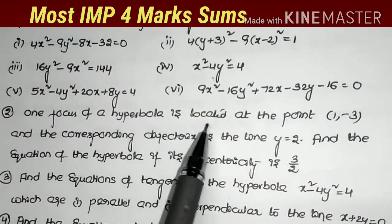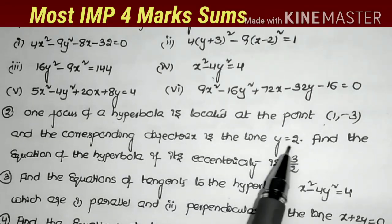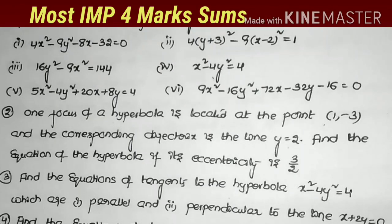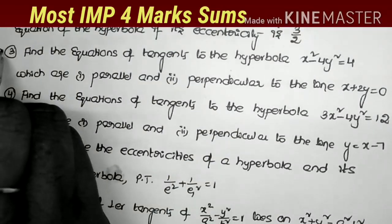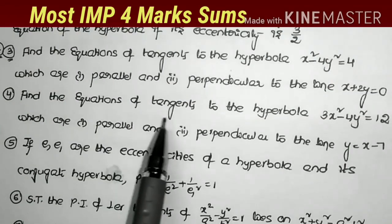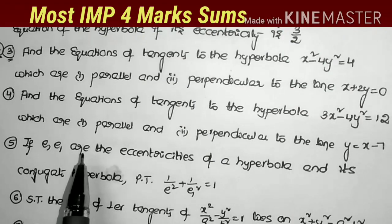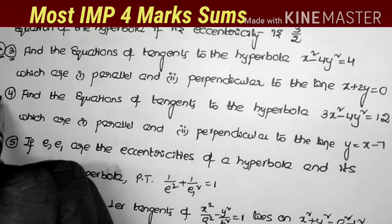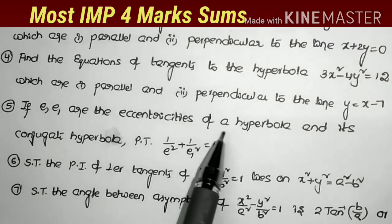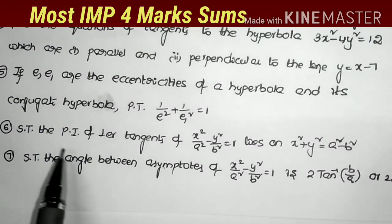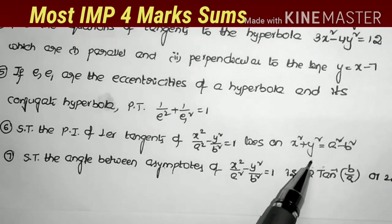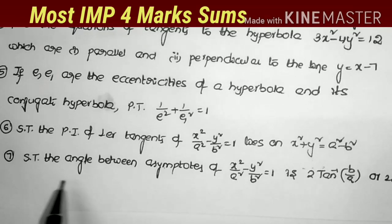Next: one focus of a hyperbola is at (1, -3) and the corresponding directrix is y = 2; find the equation of the hyperbola if eccentricity = 3/2. Next: find equations of tangents to x² - 4y² = 4 which are parallel and perpendicular to x + 2y = 0 — most important 4-mark problem. Same model: tangents to 3x² - 4y² = 12 parallel and perpendicular to y = x - 7. Next: if e and e₁ are eccentricities of a hyperbola and its conjugate, show that 1/e² + 1/e₁² = 1. Next: show that perpendicular tangents of the hyperbola meet on x² + y² = a² - b². Last: show that the angle between asymptotes of hyperbola equals 2tan⁻¹(b/a) or 2sec⁻¹(e).